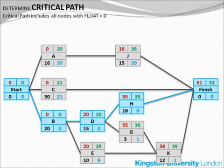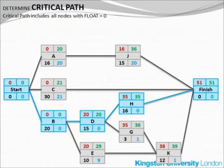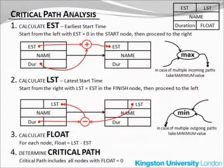All nodes with float equal to zero make the project critical path. Every project has at least one critical path, and some may have more than one. It is a crucial concept for project management, and especially for resourcing. These were activity networks and critical path analysis presented by Jarek Francic, Kingston University London.